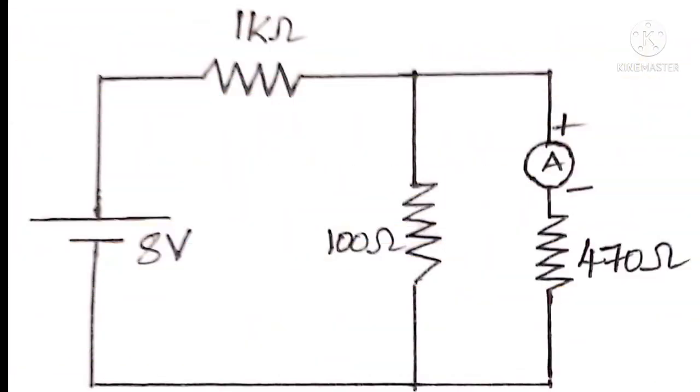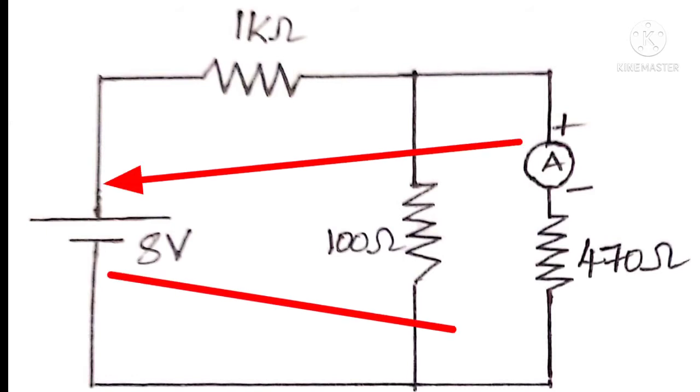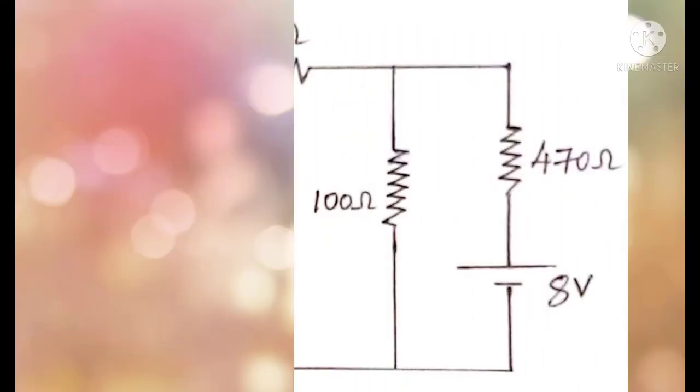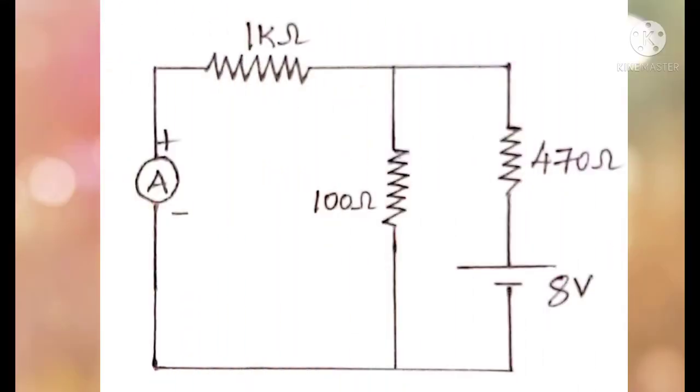In the first step of the experiment, without changing the positions of excitation and response, we will find the ratio of excitation and response. After that, we will interchange the positions of excitation and response. Again, we will find the ratio. If we interchange the positions of excitation and response, you can observe how the circuit looks like.